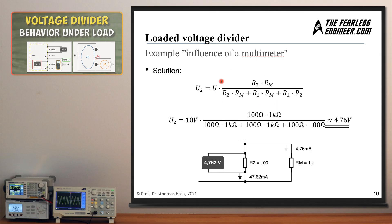Now let's look at the sample solution using the equation derived earlier. Entering the values — 10 volts for the power source and all the various resistors — gives a voltage drop across R2 of approximately 4.76 volts. Simulating the circuit confirms the computation is perfectly fine: the perfect multimeter in the circuit simulation reads 4.762 volts. We have now solved the problem of computing the voltage drop across a loaded voltage divider based on the values of the three resistors.